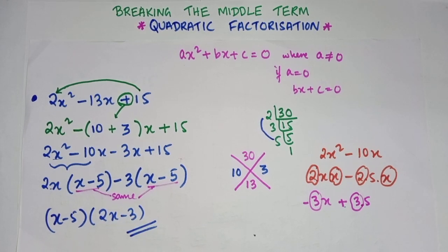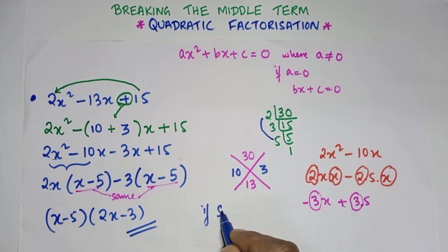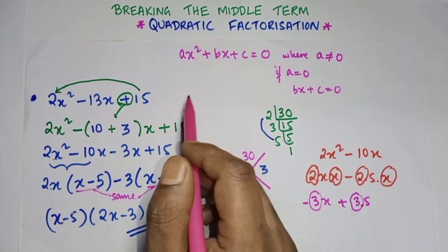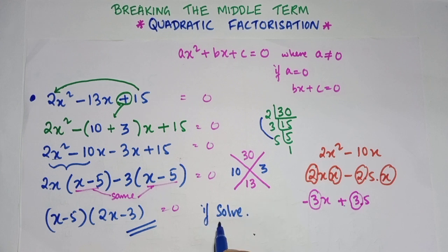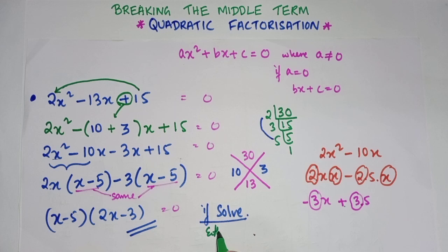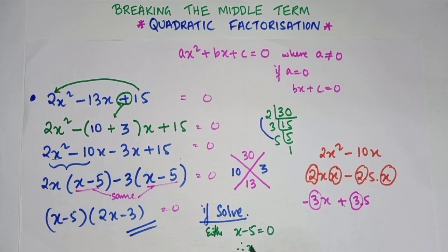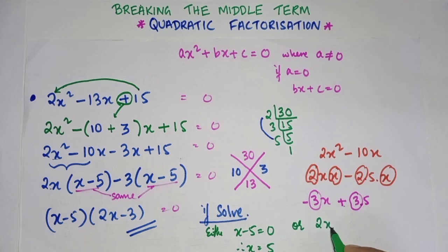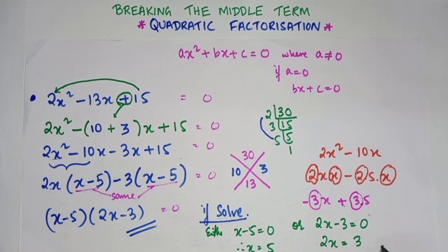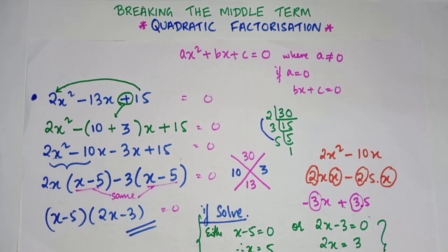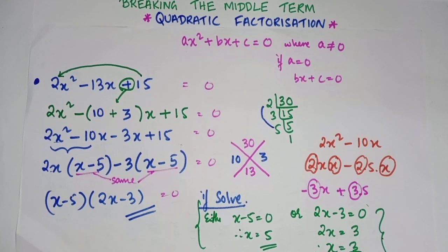This is the factorization. But if the question says 'solve,' then the right-hand side will be 0. To solve means to find the value of x. So we set each factor equal to 0: either x - 5 = 0 or 2x - 3 = 0. This is the difference between 'solve' and 'factorize.'